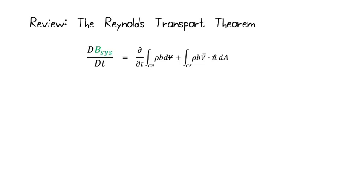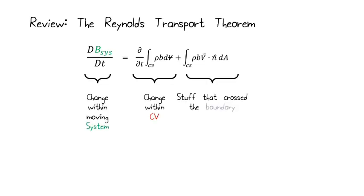So here's our review of the Reynolds Transport Theorem. We know that we have this thing called the system, where we have a fixed packet of mass that moves around. We have a thing called the control volume, which is a fixed region in space, and the control volume has a boundary that mass is able to cross, entering and leaving our control volume.